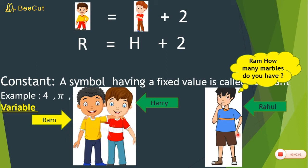If Harry has 10 marbles, then Ram has 12. If Harry has 18 marbles, Ram has 20. So you can see the difference between Ram's and Harry's marbles is always constant — it is 2. Here R and H are showing variables because their values keep changing, while 2 is showing the constant. So variables are terms whose values change.